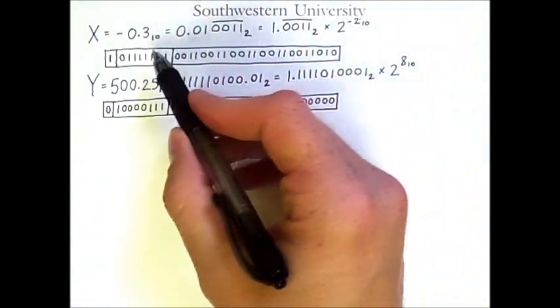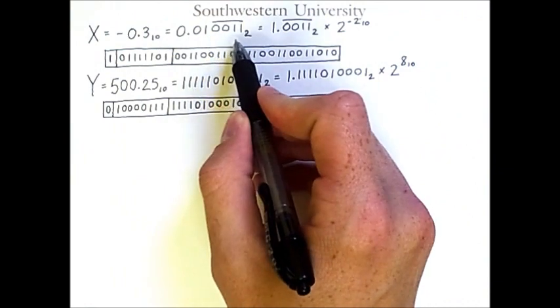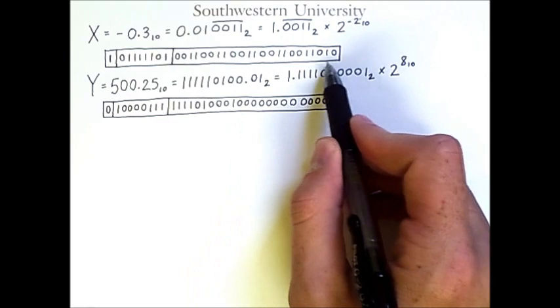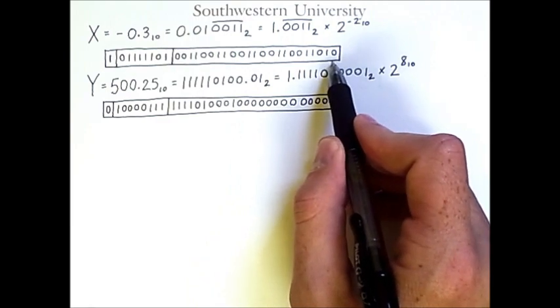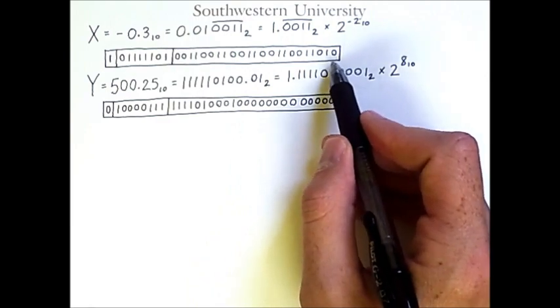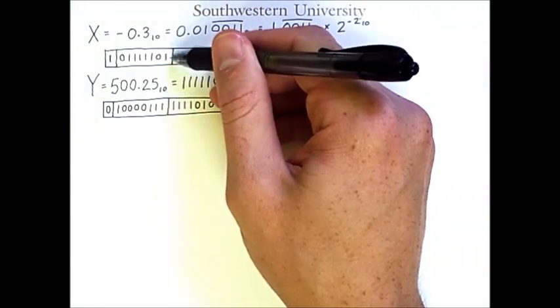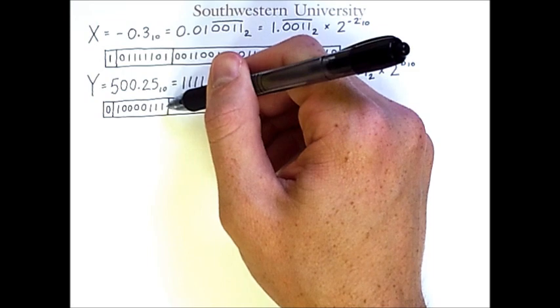Note that because 0.3 has an infinite repeating binary fraction, we had to do some rounding in the significand of the floating point representation. Also, keep in mind that the bit patterns here are the biased exponents.